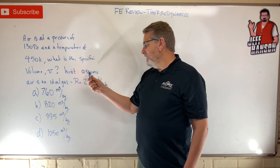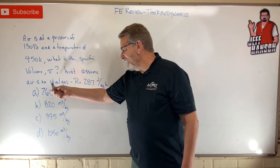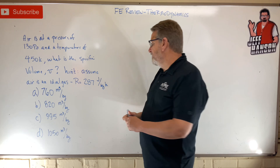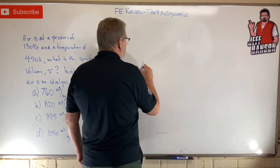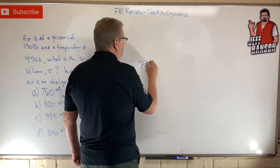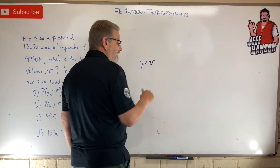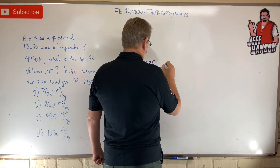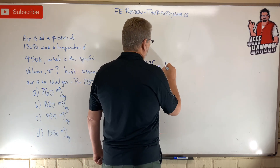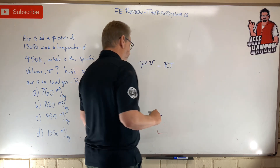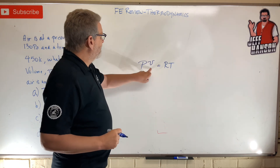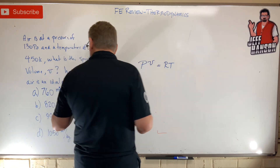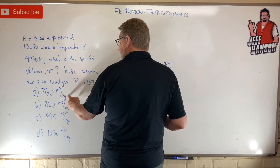The secret is right here — assume air is an ideal gas. Let's use the ideal gas law. So PV, but this time V is specific volume, is equal to RT, because the mass is on the bottom. Look at your units — there's your mass right there.